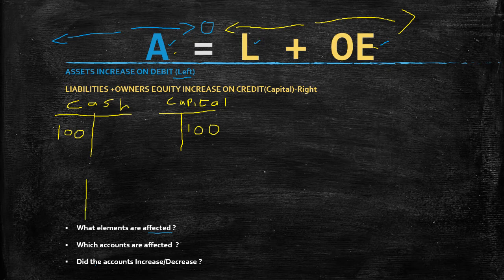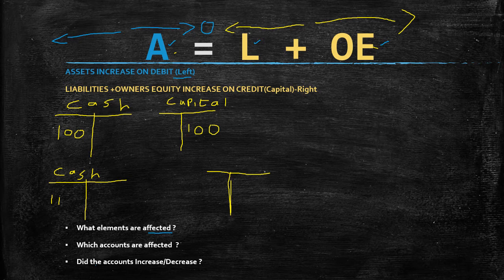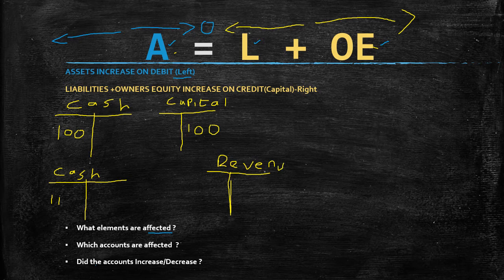Let's look at further examples. Say you sold a product for cash — let's say we sold the product for 11 rands. You ask yourself the same questions: which elements are affected? Our assets and our owner's equity. Which accounts are affected? The cash account — and since we sold a product for cash, that means we received something, so our cash account, which is an asset, is going to increase on the left hand side. Here we have our revenue account, which is our owner's equity, and revenue is going to increase on the right hand side, because it is owner's equity.